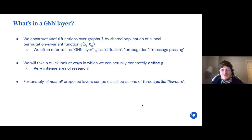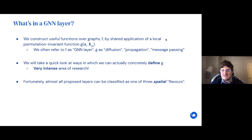At the heart of everything is this function g, which takes a node's features and all the features in its immediate neighborhood and decides what the resulting feature should be for that node. You apply that function to every node's neighborhood in isolation. In the graph neural network literature you might have seen this function g referred to as diffusion, propagation, or message passing.